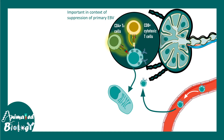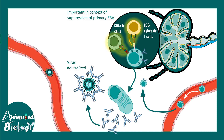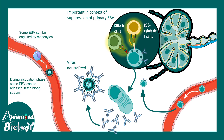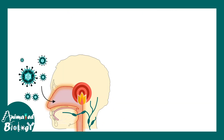Once activated, B cells form plasma cells that secrete antibodies against EBV, which can neutralize and opsonize the virus. However, some escapee viruses in the bloodstream are taken up by monocytes, which secrete inflammatory cytokines such as interleukin-1, interleukin-6, and TNF-alpha, leading to fever.